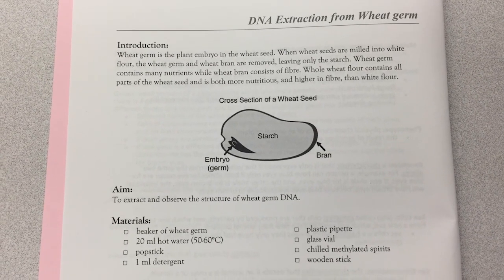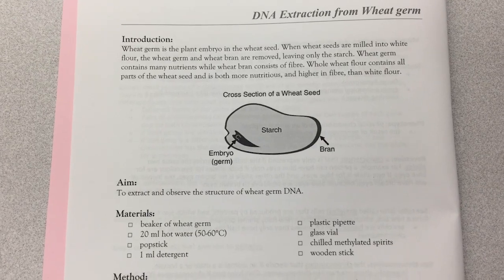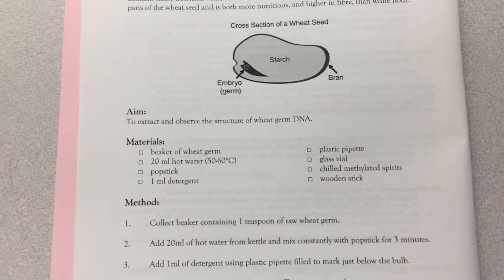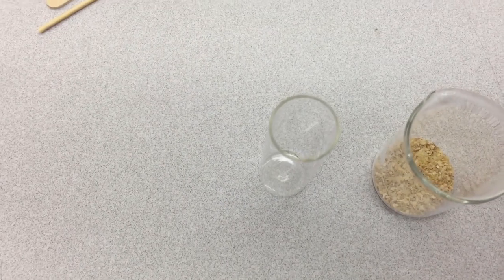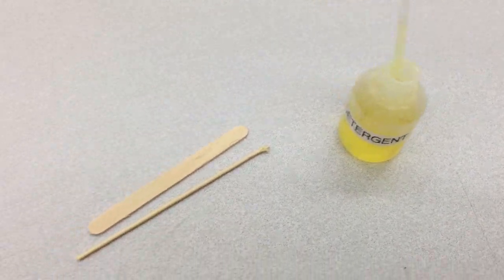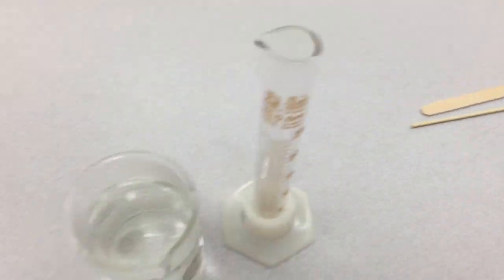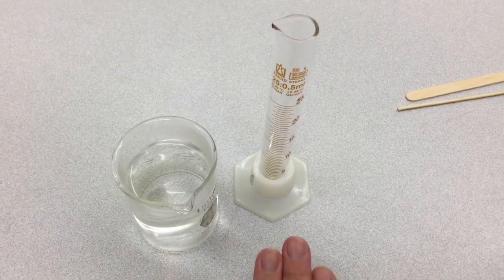So you'll see our aim is to extract and observe the structure of wheat germ DNA. We have a certain collection of materials: a beaker of wheat germ, a glass vial, some detergent, popsicle stick, a beaker of hot water, and a measuring cylinder.